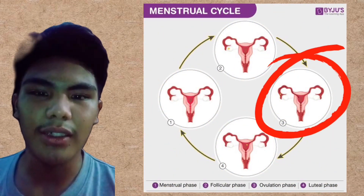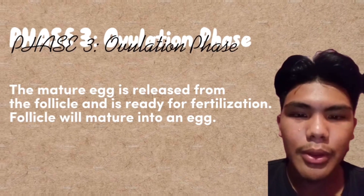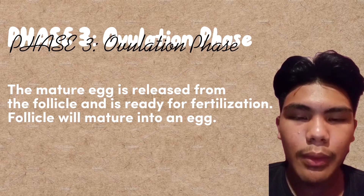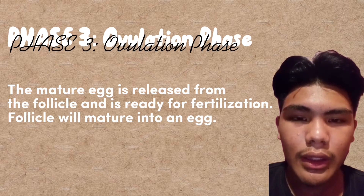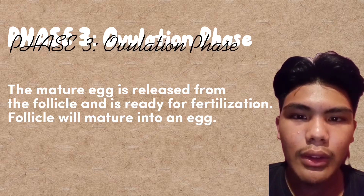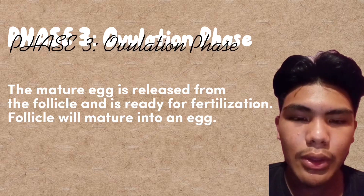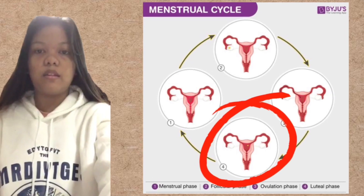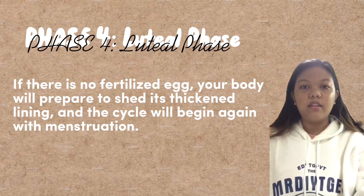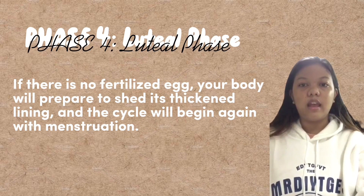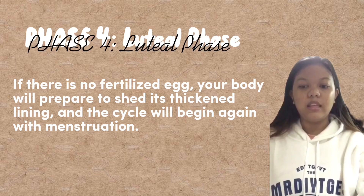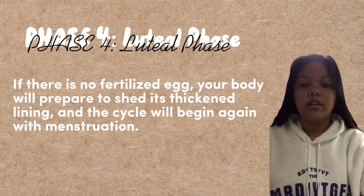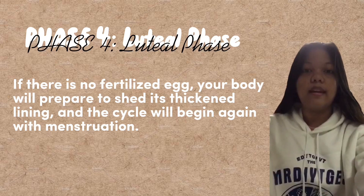Phase 3: Ovulation phase. The mature egg is released from the follicle and is ready for fertilization. Phase 4: Luteal phase. If there is no fertilized egg, the body will prepare to shed the uterine lining, and the cycle will begin again.